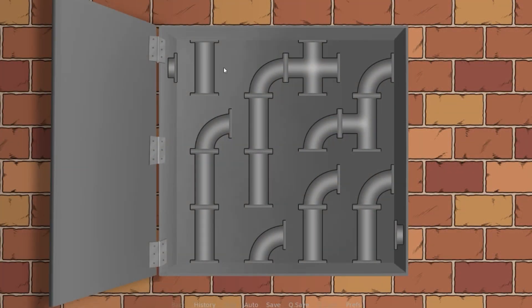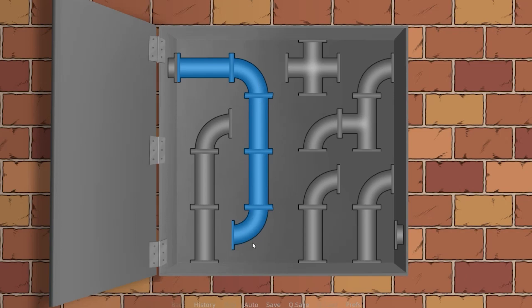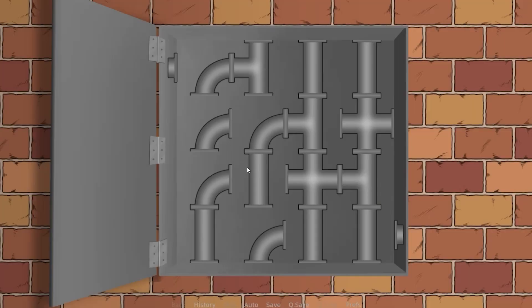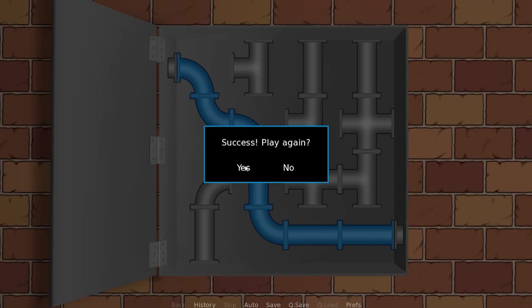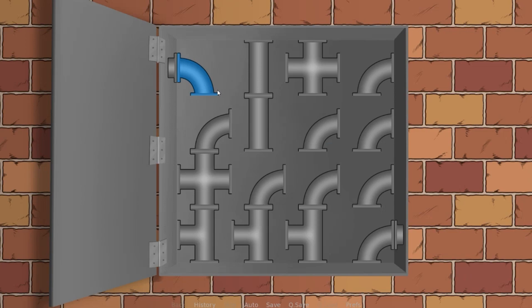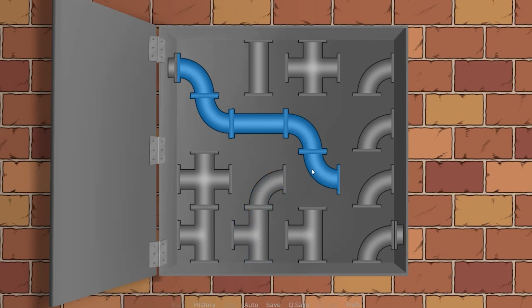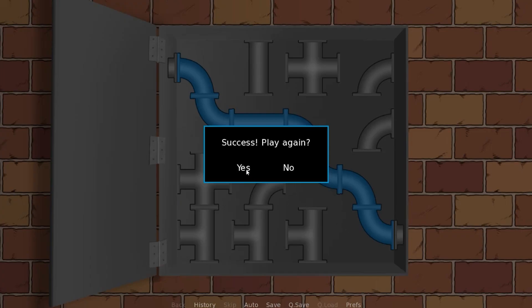In this tutorial, we're going to look at how to make a classic plumbing minigame or pipe connecting game in Ren'Py. The goal with the minigame is to connect pipes from a starting point to an end point so that liquid can pass through. To do this, we'll take help of a grid display where we can place each pipe as an image button that we can click on in order to rotate. Once a valid connection has been made, the minigame ends and we can do whatever appropriate action we want, such as showing a screen or jumping to a label.